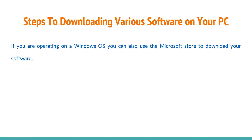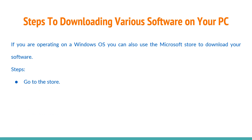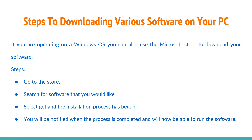If you are operating on a Windows operating system, you can use the Microsoft Store to download your software. Go to the store, search for the software that you would like, select 'Get' and the installation process will begin. You will be notified when the process is completed and will then be able to run the software.